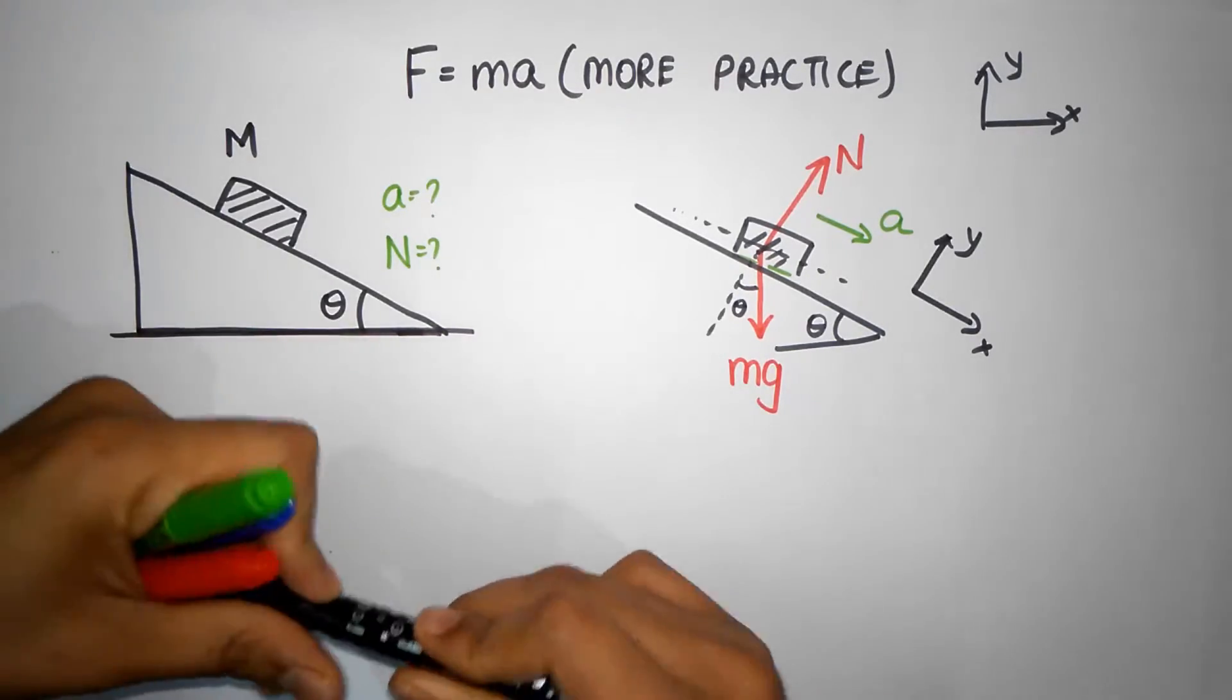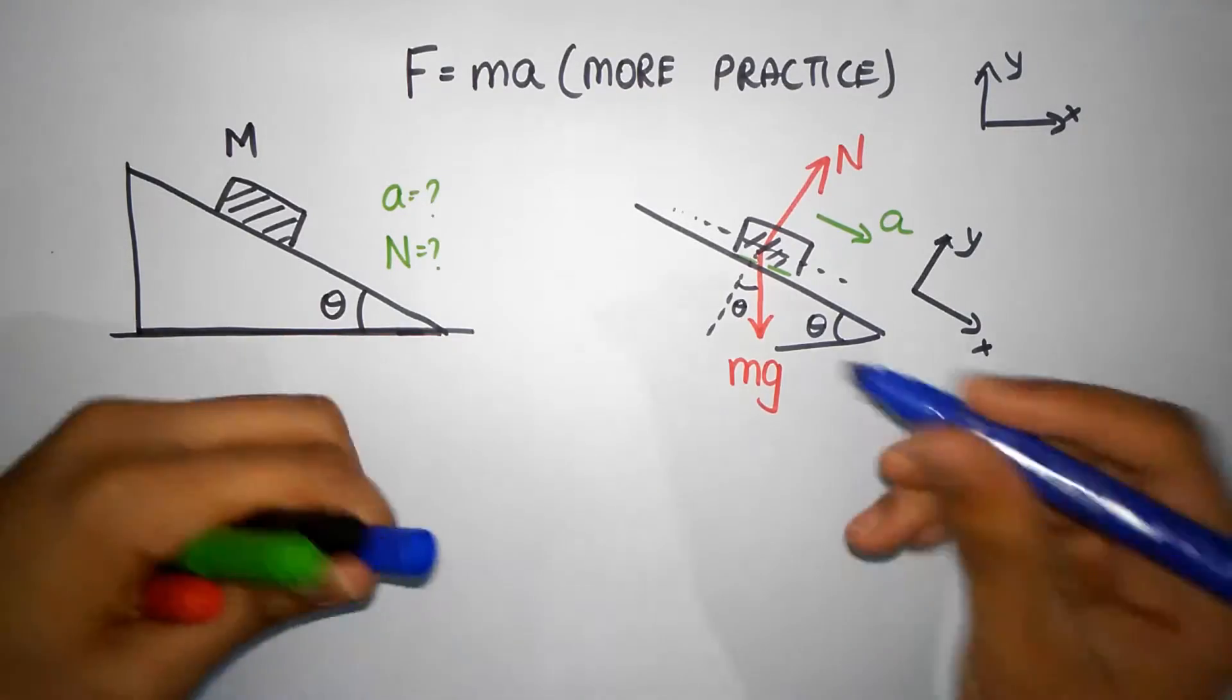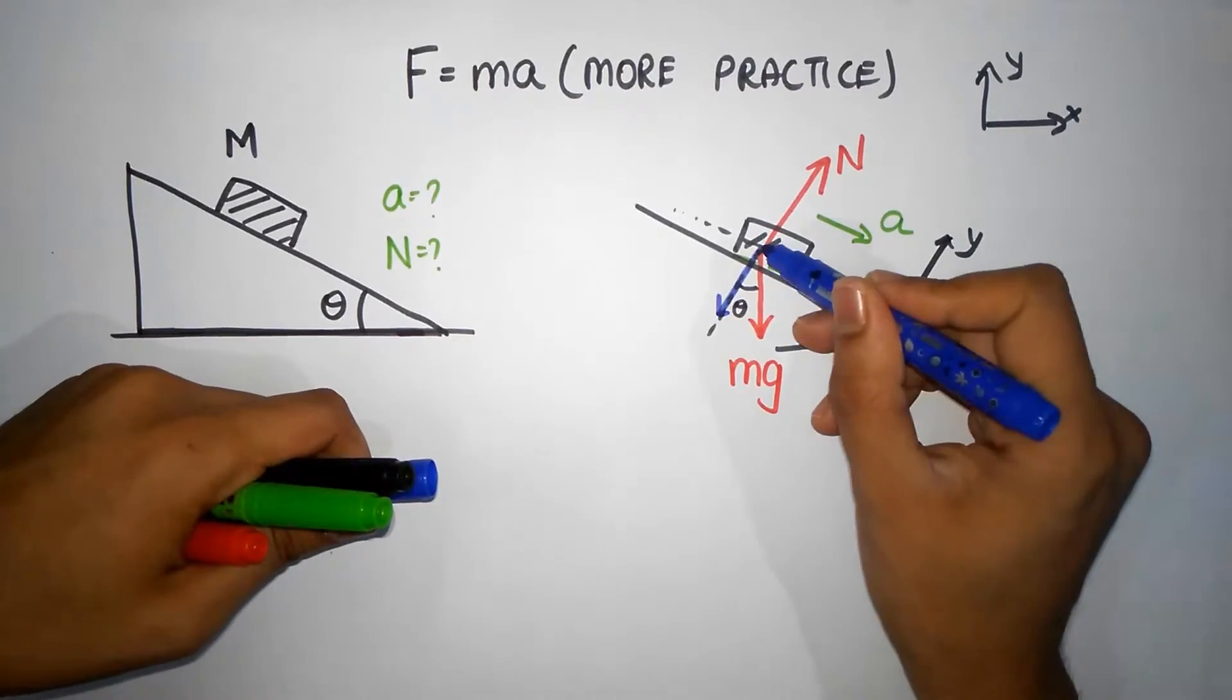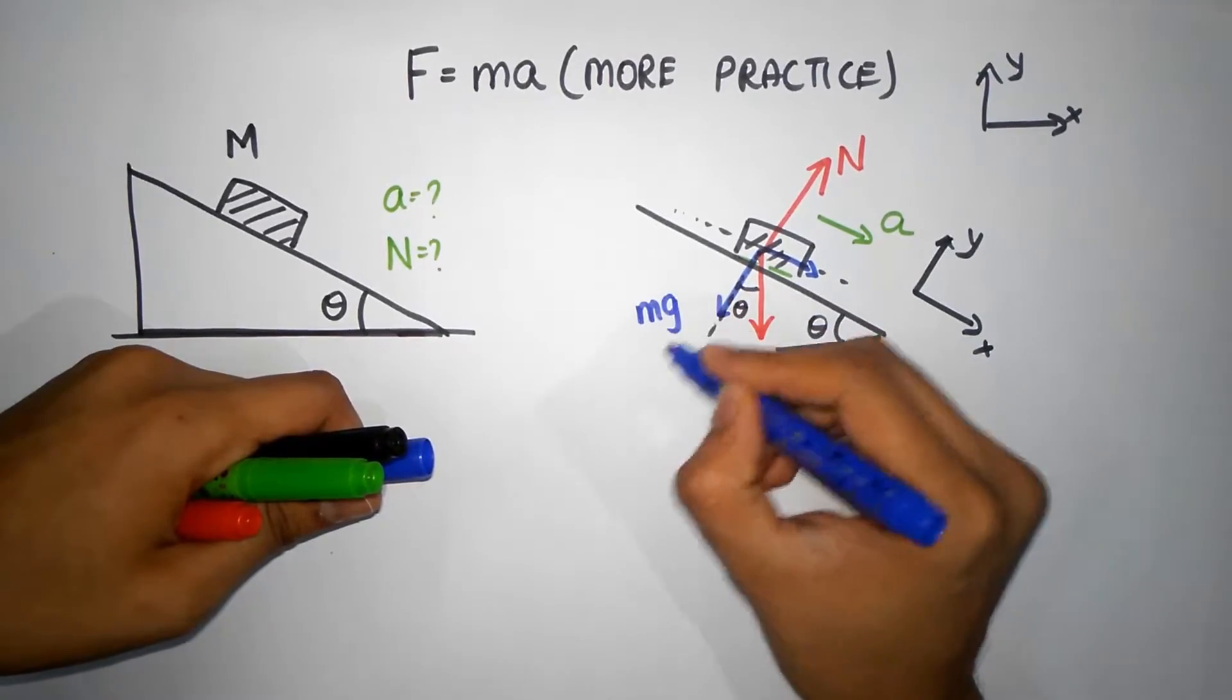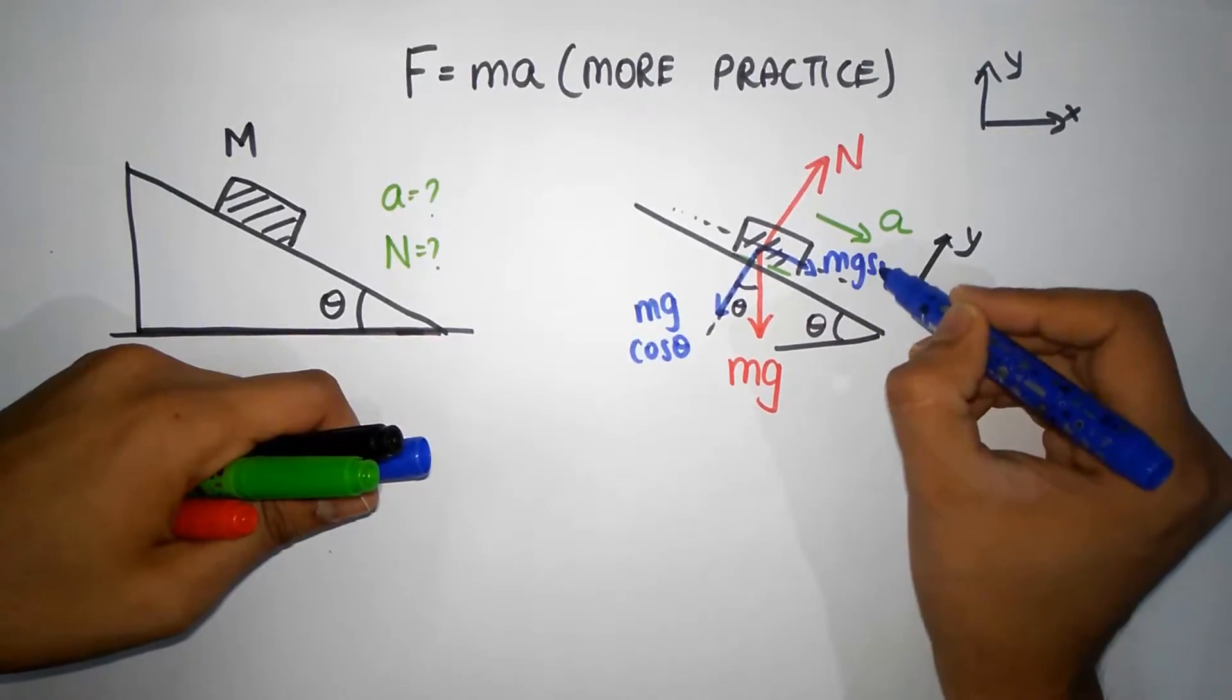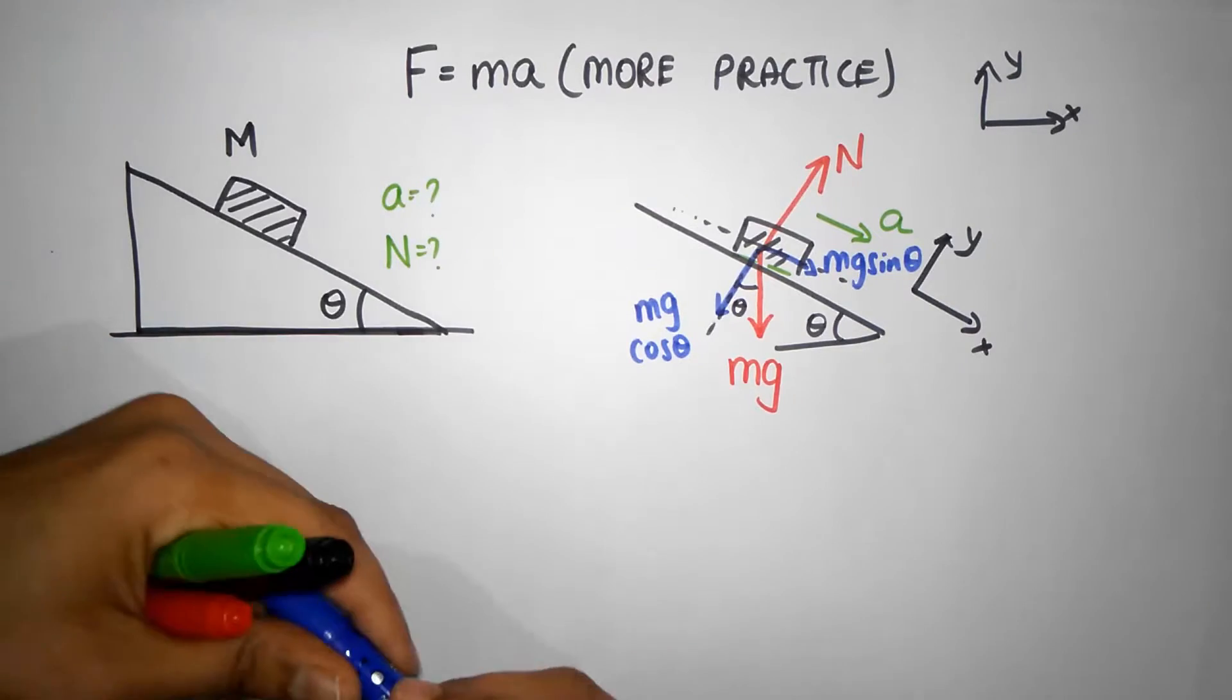Okay, all right. Now we will resolve mg. mg has two components. One component will be this way, the other component will be this way. This is the adjacent component, so it's mg cos theta. This is mg cos theta, and this is mg sin theta.